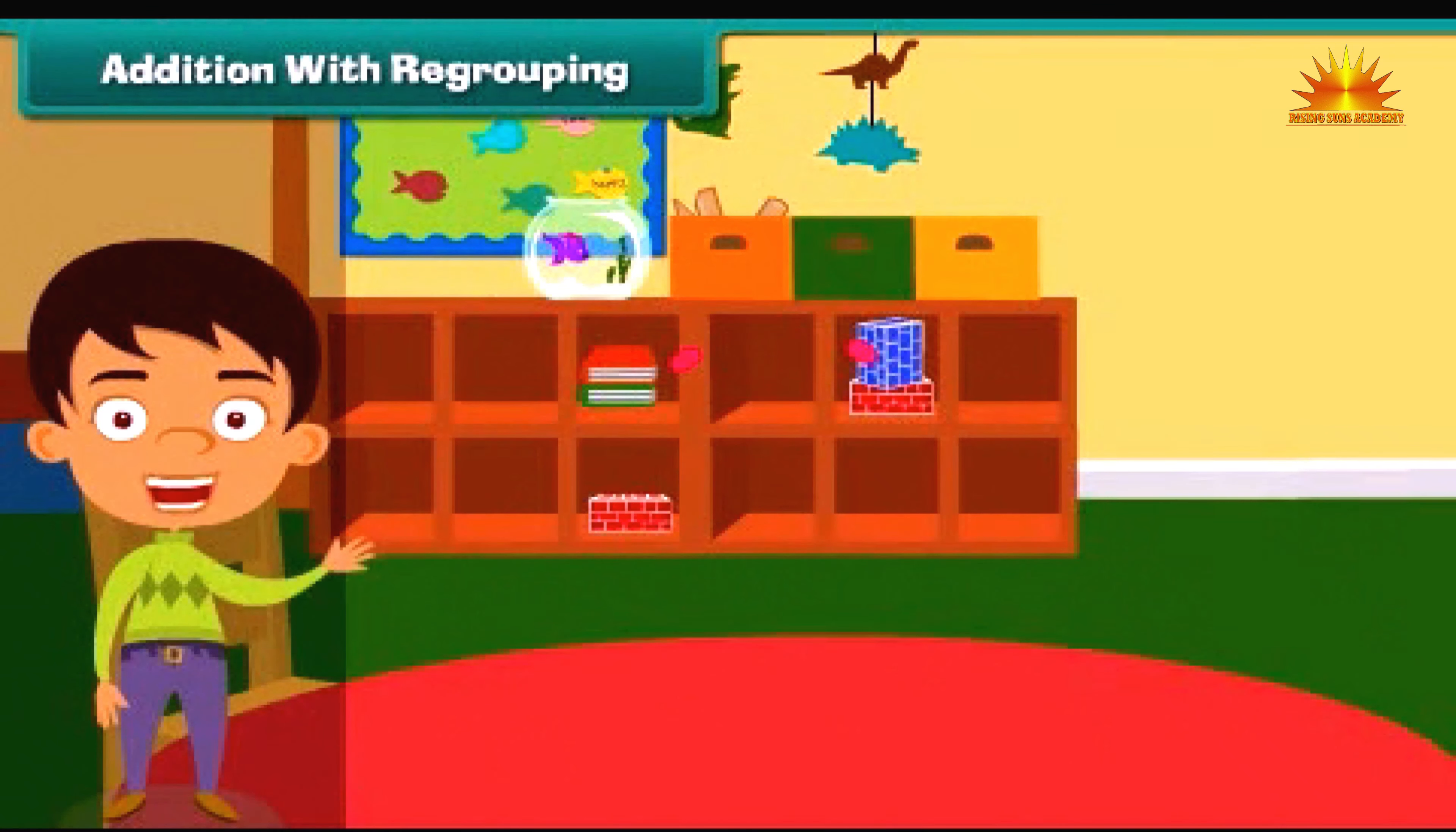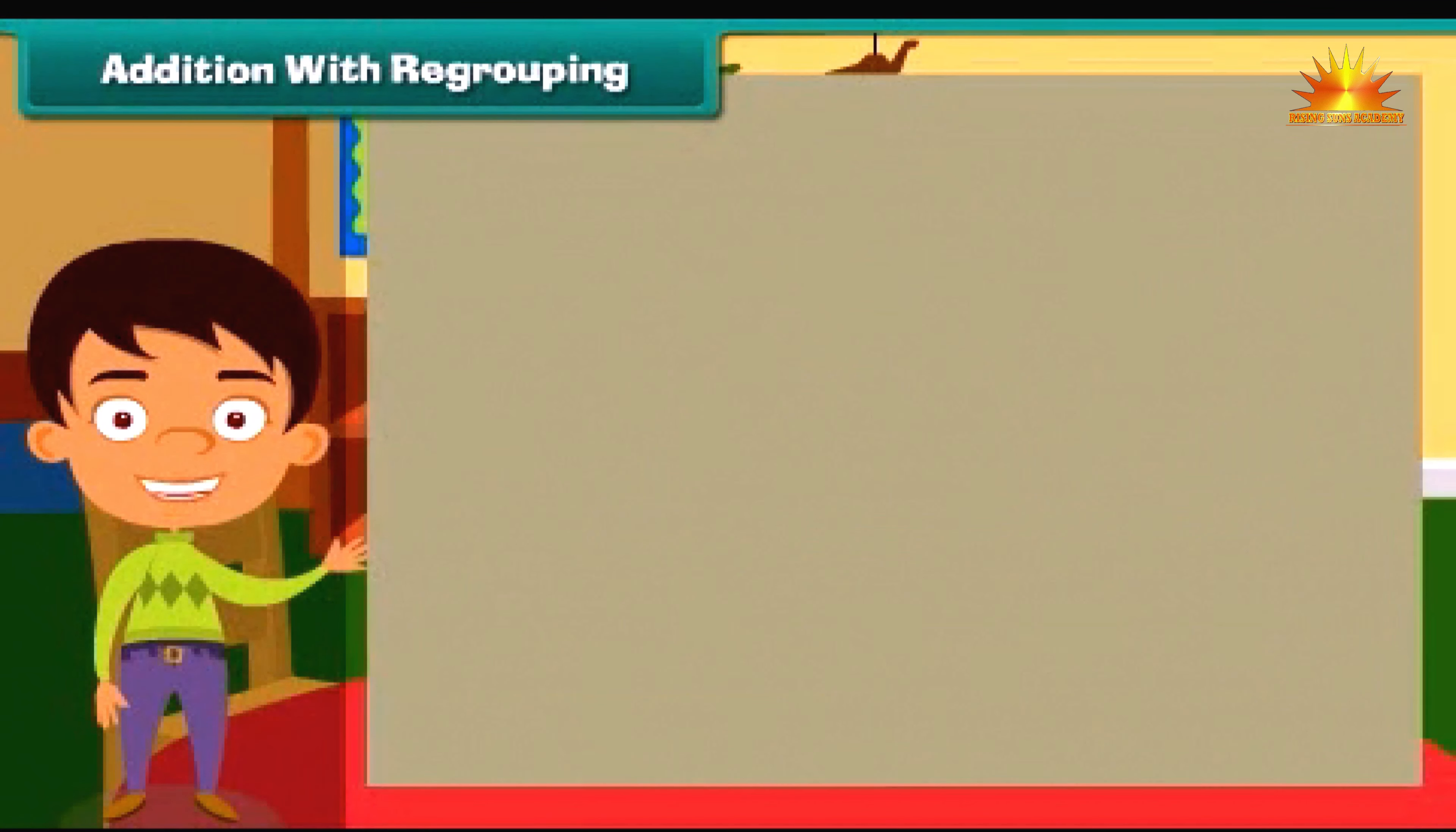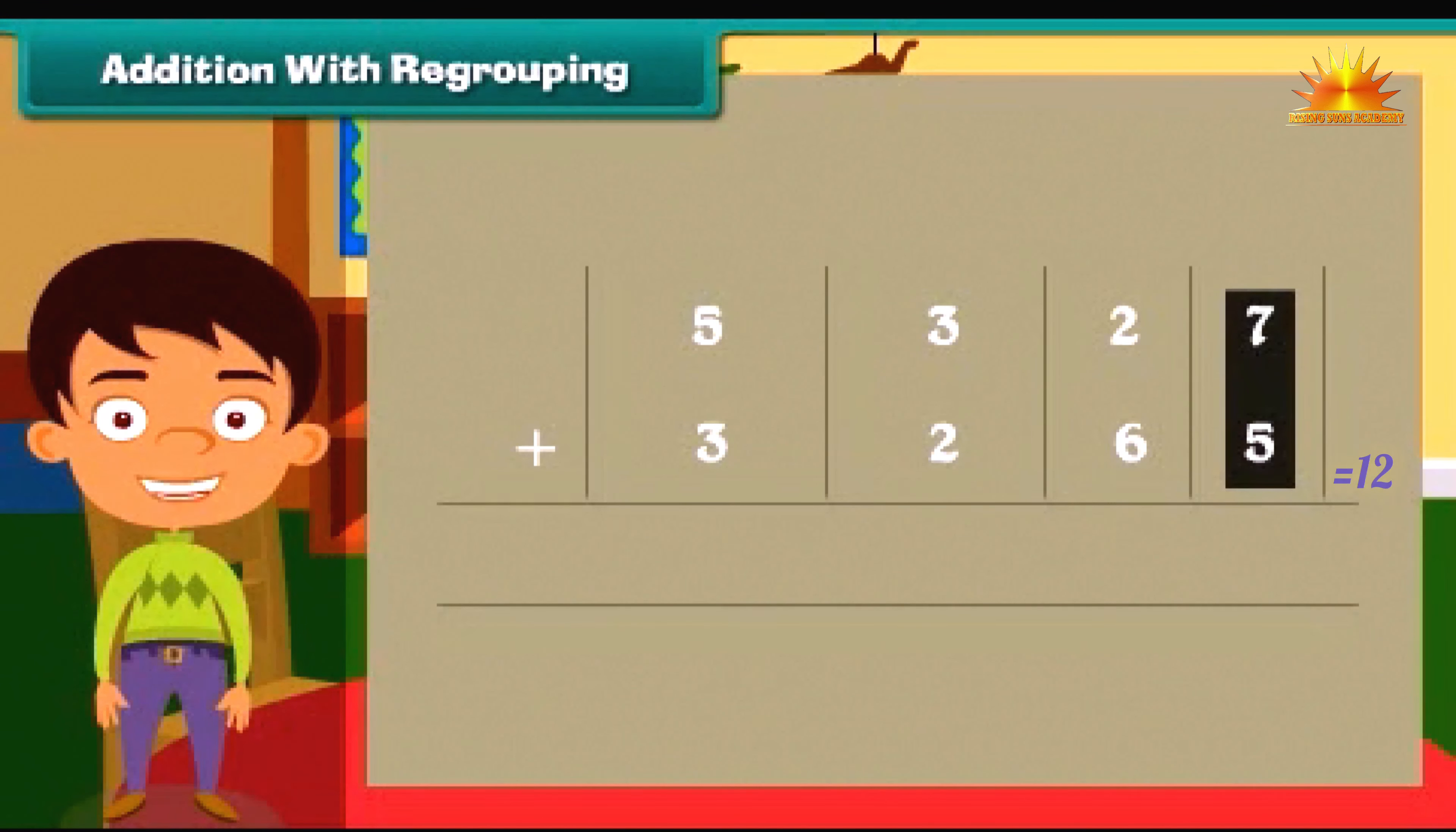Addition with regrouping. Let's try the addition of 5327 and 3265. We start by adding values at one's place, which is seven plus five is equal to twelve. Write two below in the ones line and write one above in the tens line.